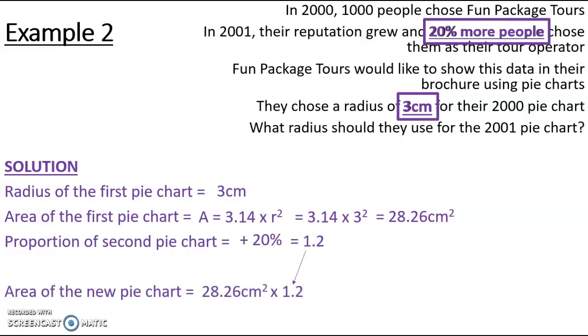So the area of my new pie chart is the 28.26 times 1.2, which is 33.912 centimeters squared.